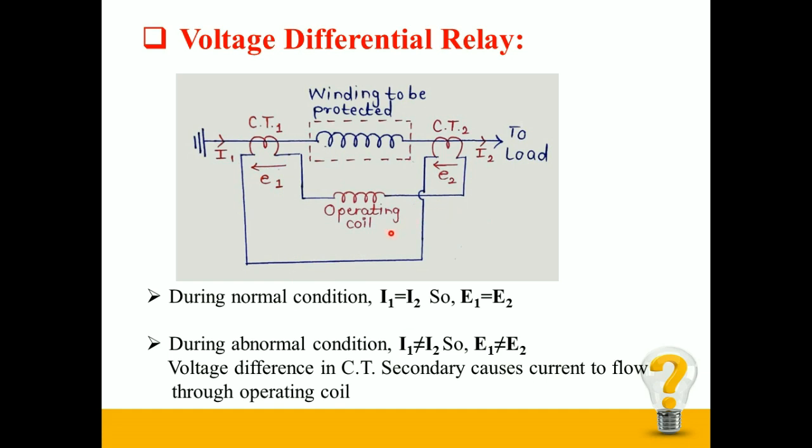Therefore no current flows through the operating coil and relay remains unenergized. But during abnormal condition as I1 is not equal to I2, so secondary induced EMF E1 and E2 are also not equal. Therefore voltage difference in CT secondary causes current to flow through operating coil and energize the relay, which sends a trip signal to circuit breaker to protect the winding.